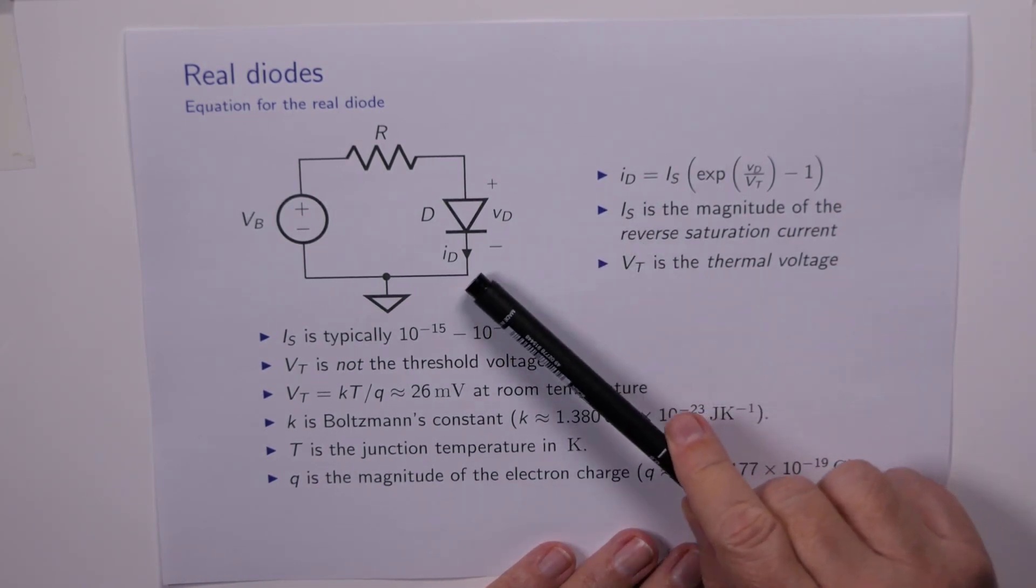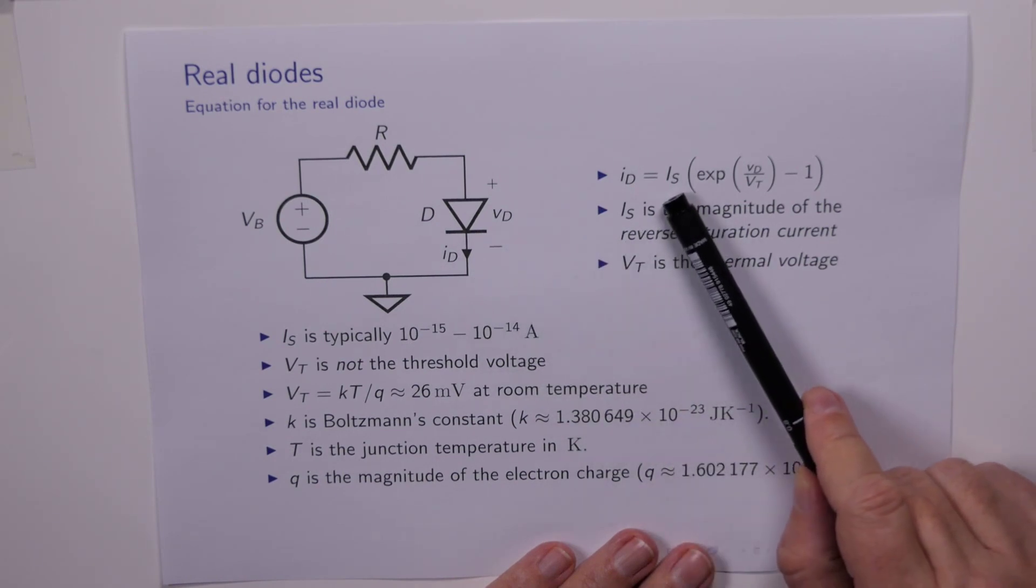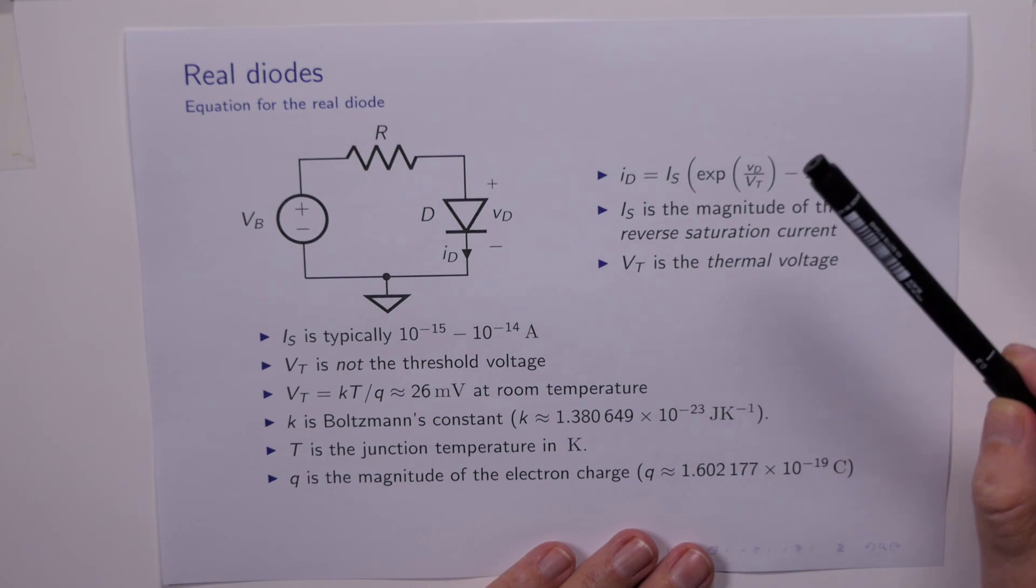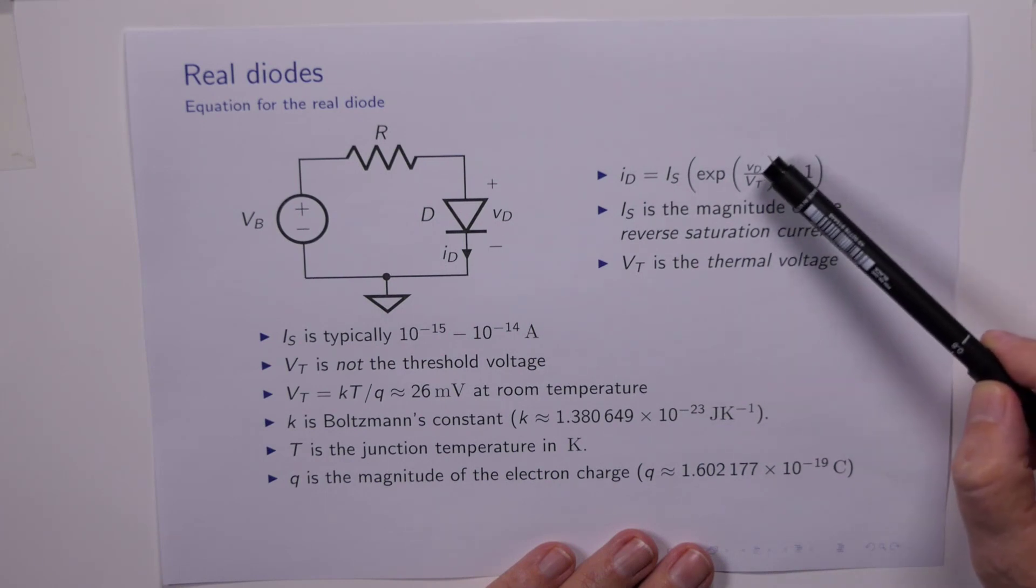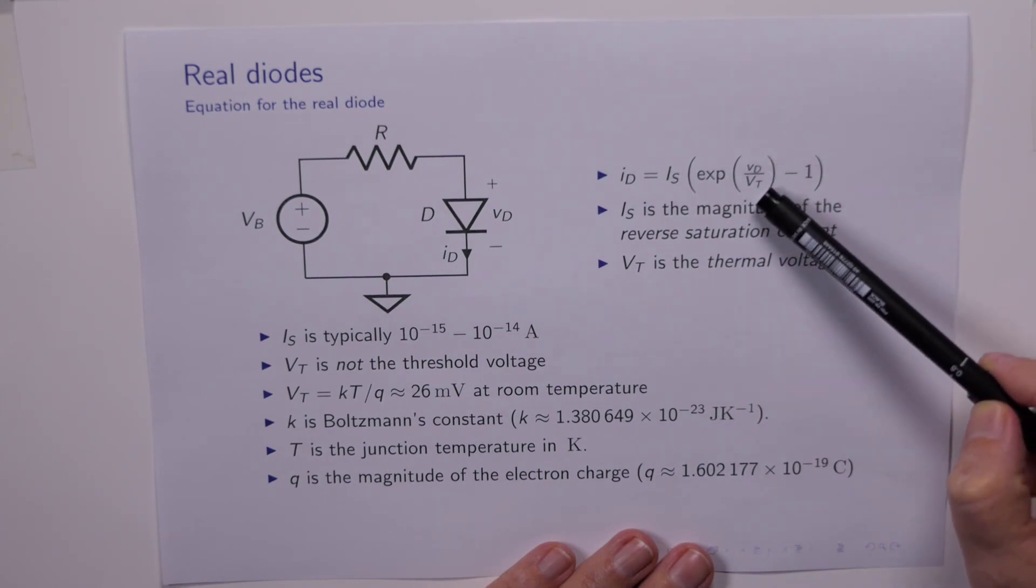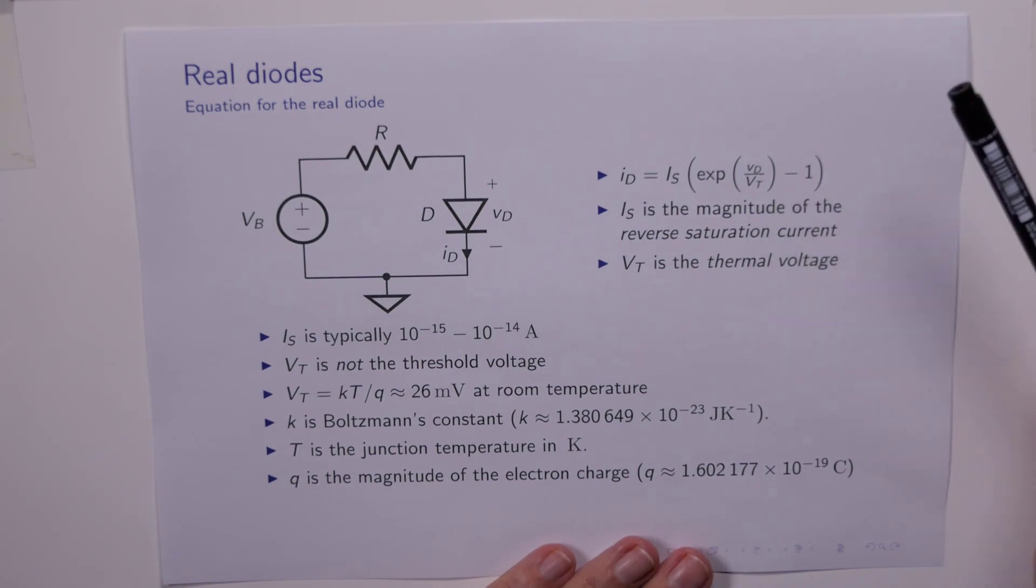Id, of course, is the diode current. Is is the reverse saturation current that we saw in a previous graph. So the current that flows when the diode is reverse biased. We have Vd, which is the voltage across the diode. Vt, which we call the thermal voltage.